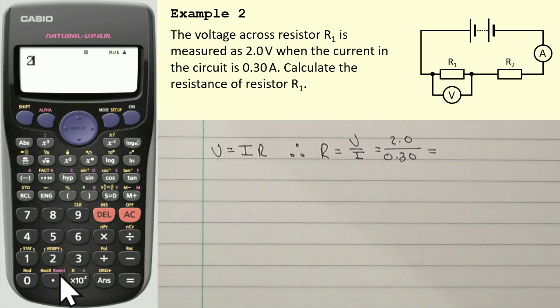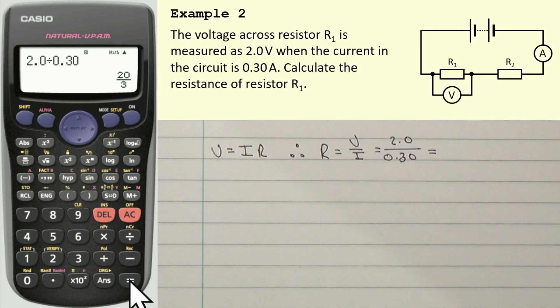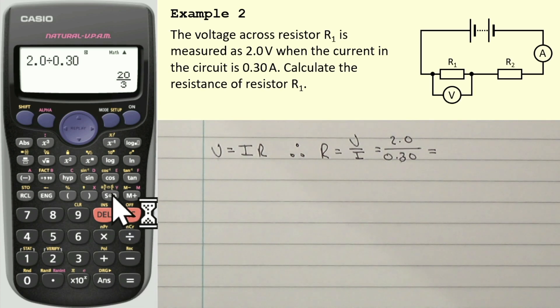So let's calculate that. I've got 2.0 divided by 0.30. And that gives us 20 divided by 3. Again, remember, don't write your final answers as fractions. What I would need to do, of course, is to press that SD button. And it then tells us this. 6.6.